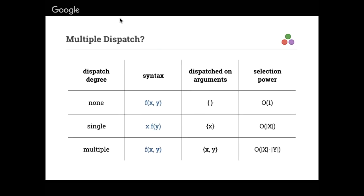There's no dispatch. What F means doesn't depend on any of the arguments — it just is what it is. This 'column selection power' is about how many different pieces of code could possibly be selected based on just this one thing you see: F of X comma Y. The answer for no dispatch is that there's only one thing — it's order one.